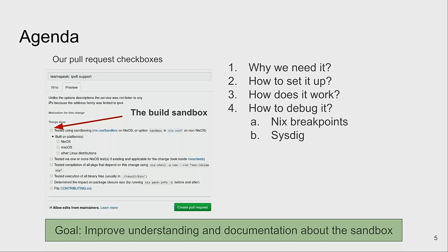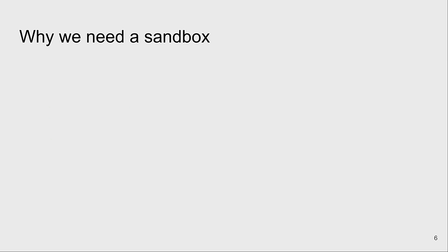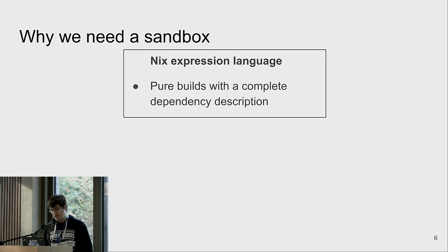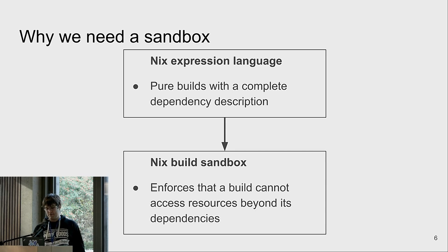The overall goal of this talk is to understand and improve documentation on sandboxes so everyone can check the sandbox and know what they're checking. So why do we actually need this sandbox? We have our Nix expression language that creates a derivation describing nicely what should go into a build, and then we have the Nix sandbox that enforces that the build does not exceed that dependency description.